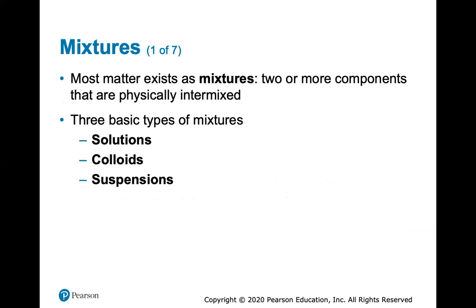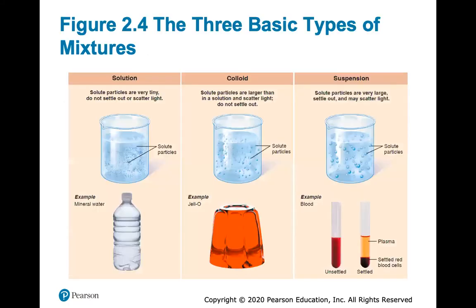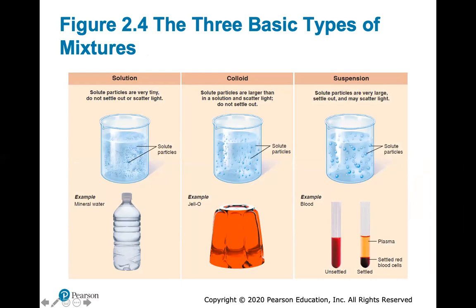Most matter exists as mixtures — two or more components physically intermixed. Three basic types are a solution, a colloid, or a suspension. In a solution, solid particles dissolve into a solvent — an example is mineral water. A colloid has larger solid particles that scatter light and don't settle out — like jello. A suspension has very large solid particles that settle out and may scatter light — an example is blood, where red blood cells settle out after centrifugation.